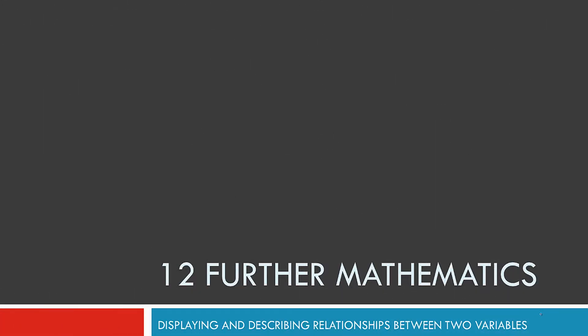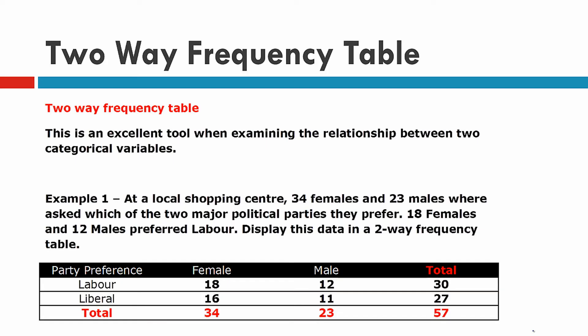Today we're going to be looking at displaying and describing the relationship between two variables. The way to do that is to have a two-way frequency table. This is an excellent tool when we examine this type of relationship between two categorical variables.